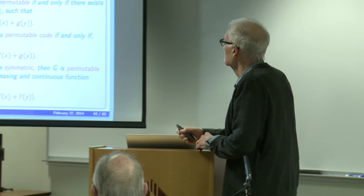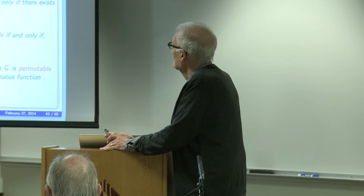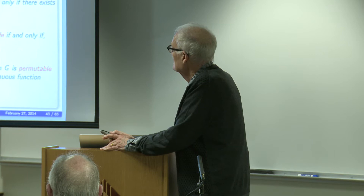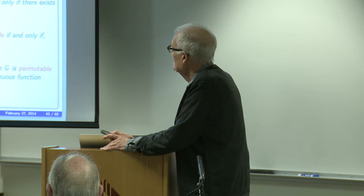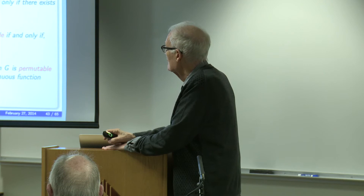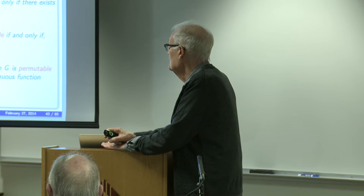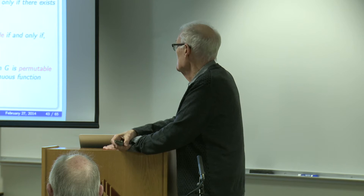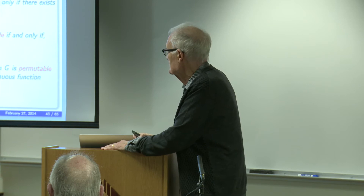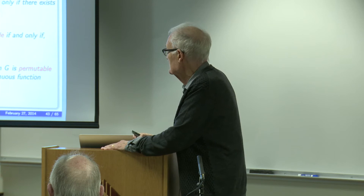Here is a lemma also straight from Axel's book. Given a solvable code f: it is quasi-permutable if and only if there exist three functions m, f, and g such that you have the first red equation. A solvable code is permutable if and only if there exist f and g satisfying the second equation. If you have symmetry in addition — permutability and symmetry — if and only if you have the last equation.